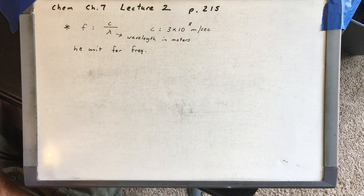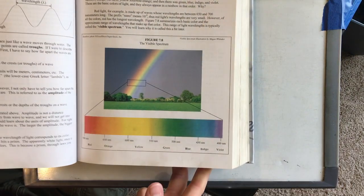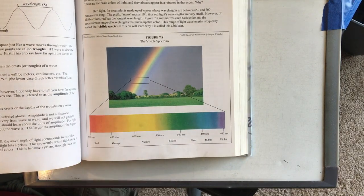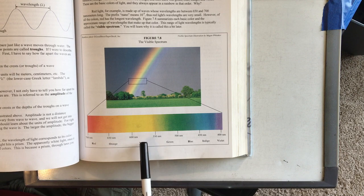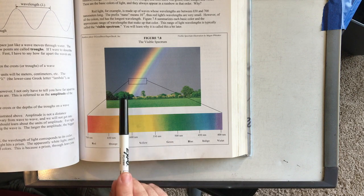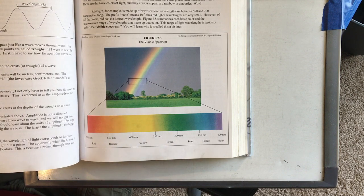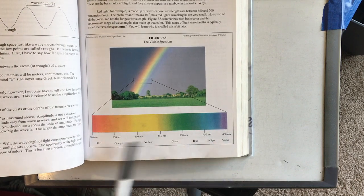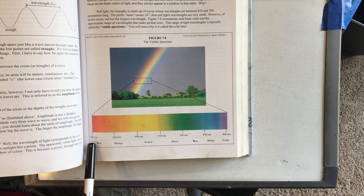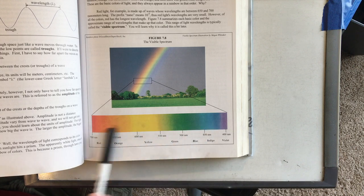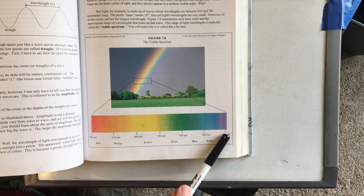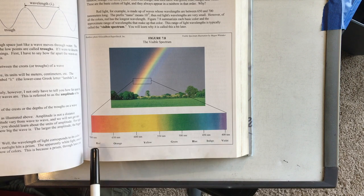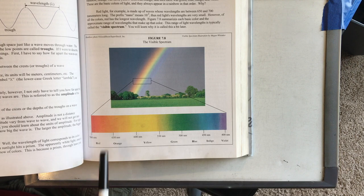If you look at your book on page 215, you will see the visible spectrum. Light that emanates from the Sun — human eyes can only see a really small portion of that. We can see from 400 to 700 nanometers. You'll be using this chart to answer some of your homework questions. 400 nanometers is the shortest wavelength and that's the highest energy. Red has the longest wavelength and the lowest energy.